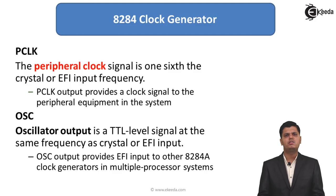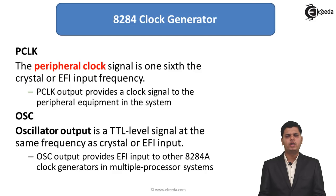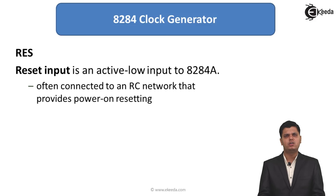The oscillator output is a TTL level signal at the same frequency as the crystal or EFI pin. It provides the EFI input to other 8284 clock generators in a multiple processor system. In a multiprocessor system the same clock needs to be provided to a number of different blocks, so the oscillator output shares the same frequency as the EFI or crystal oscillator.